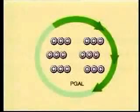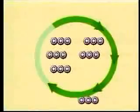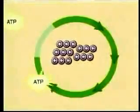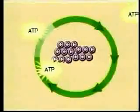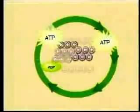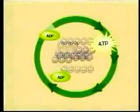These three-carbon molecules are now called PGA-L. Of the six PGA-Ls formed, five remain in the Calvin cycle while one exits. As the cycle continues, the five PGA-Ls rearrange back into three molecules of five-carbon RU-BP. This requires three more ATPs.